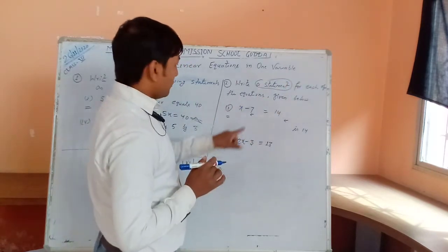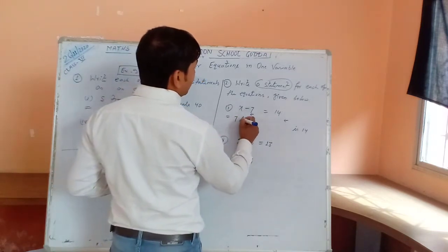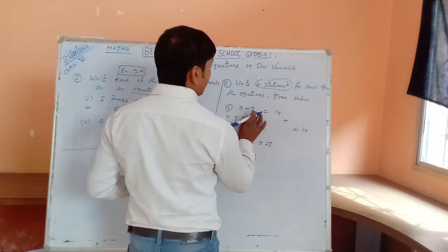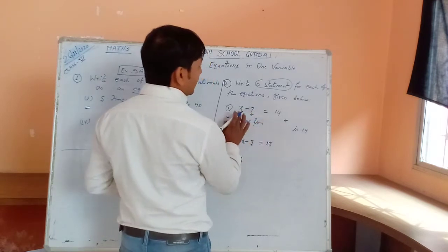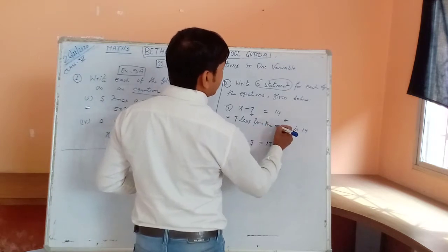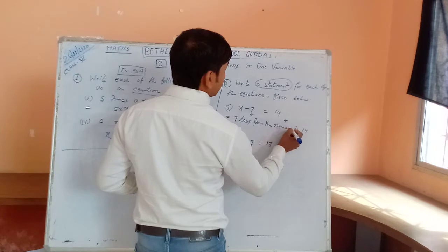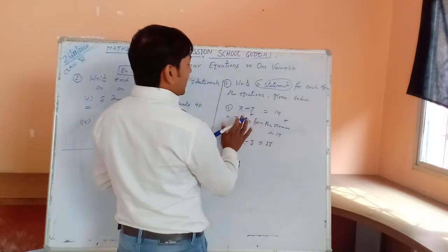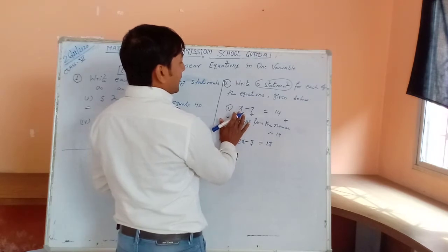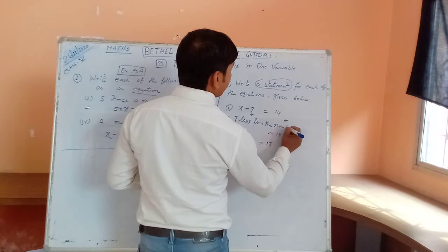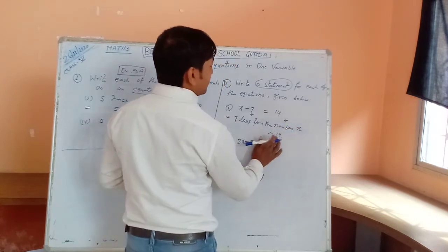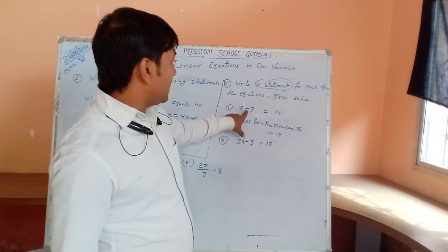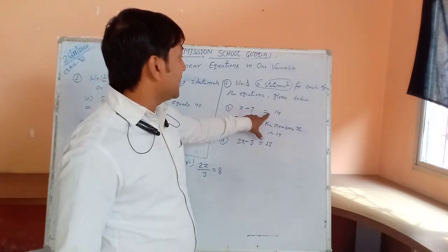Always start from the left side. Minus means 'less,' so we write '7 less.' From which? From the number x. So the statement reads: '7 less from the number x equals 14.' Read it again: 7 less from the number x is 14.